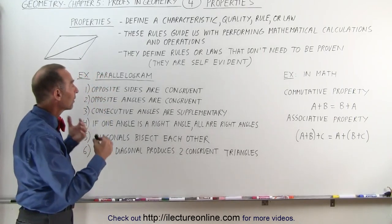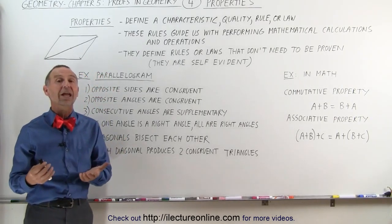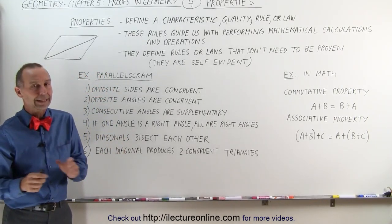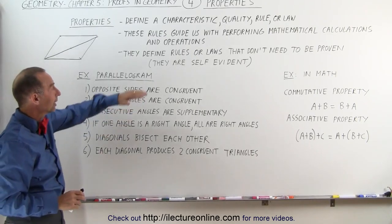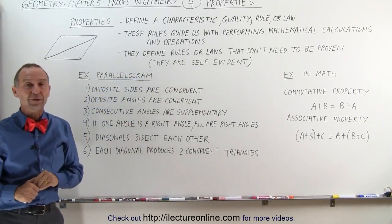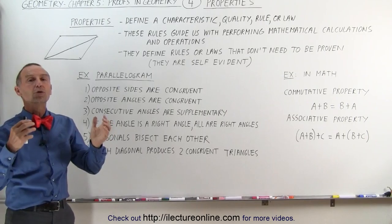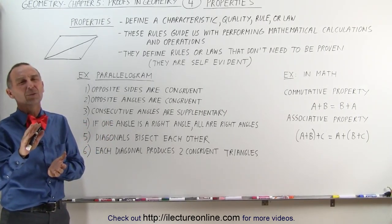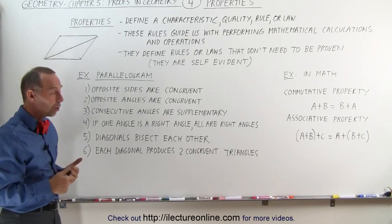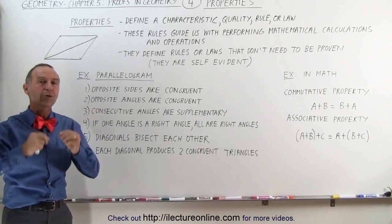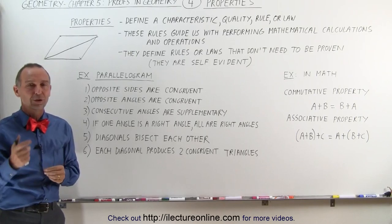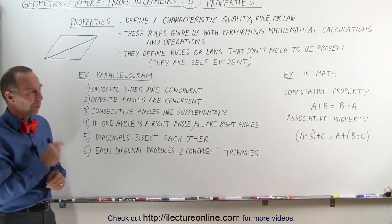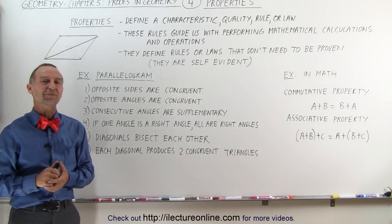So here you have now some examples and hopefully a better understanding of what we mean with a property. Again, it doesn't need to be proven. They're simply self-evident. So now we have all the tools that we need to start doing proofs. Well, not quite yet. We need to get through a few more definitions. We'll do a few more videos of that, and then we'll start guiding you through how to actually execute the proofs. So stay tuned, and we'll show you some more definitions.